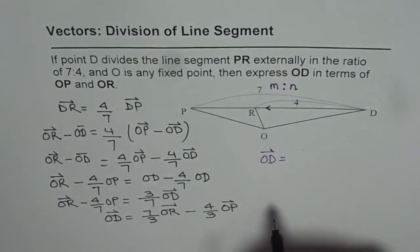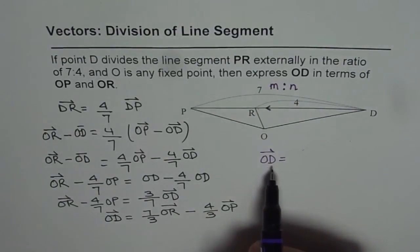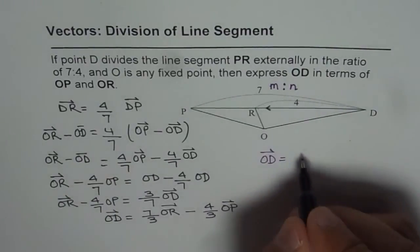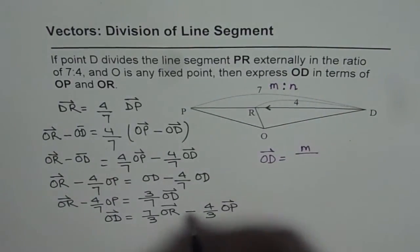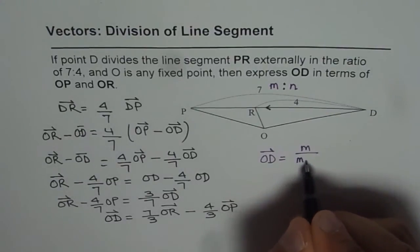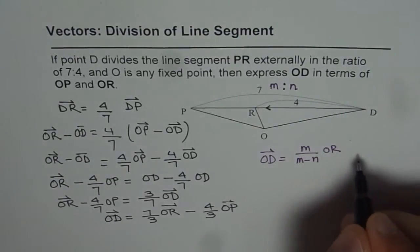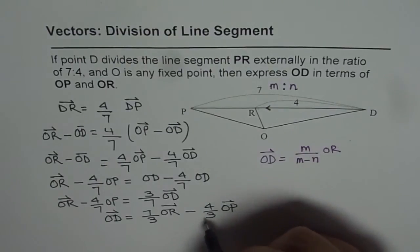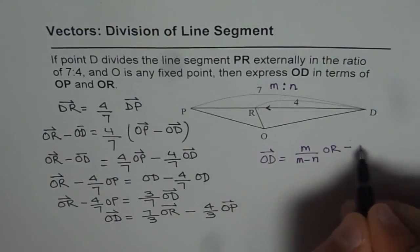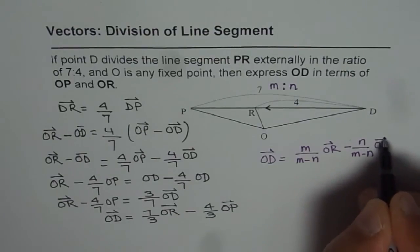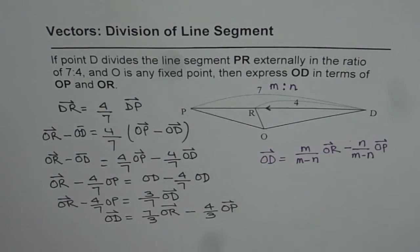In that case, our formula would have been OD will be M over M minus N. This is M minus N times OR plus - so, since it is external, it becomes negative N over M minus N of OP. So, in general, we get this kind of a formula.